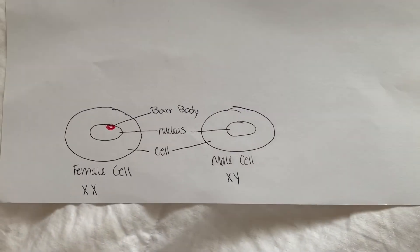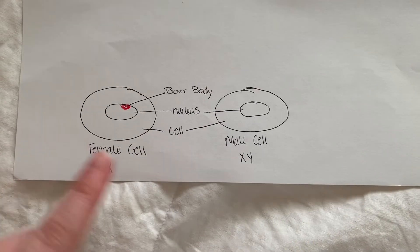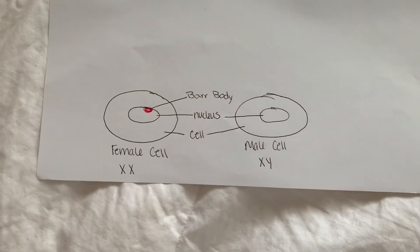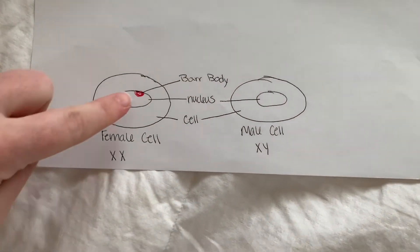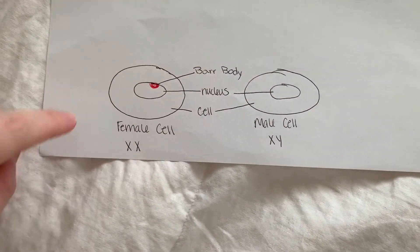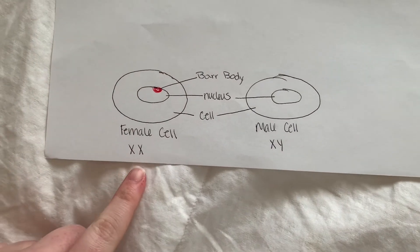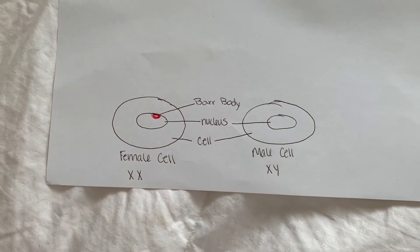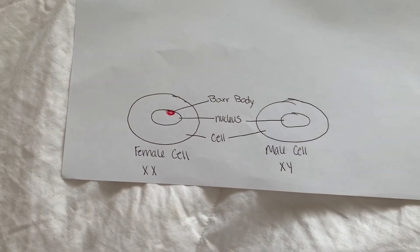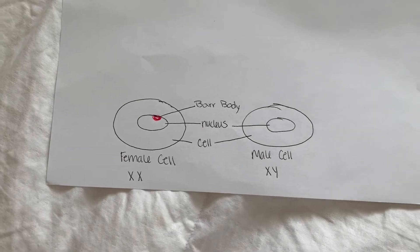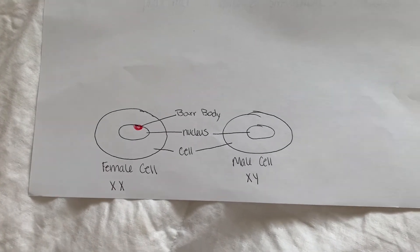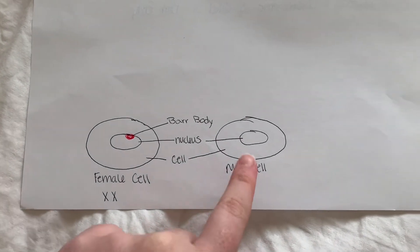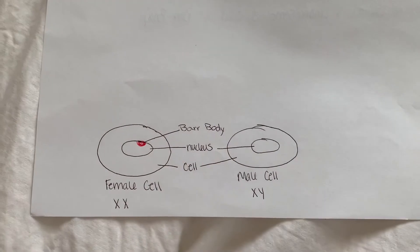These two cells represent a female and a male. You can tell that the female cell has a Barr body right here because there are two X's and one of the X's must be canceled out in X inactivation, creating a Barr body. As you can notice, the male cell does not have one of those.